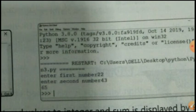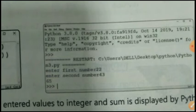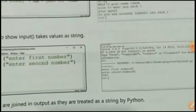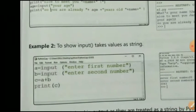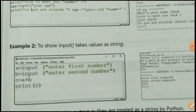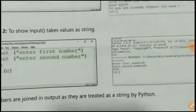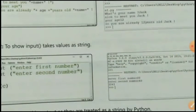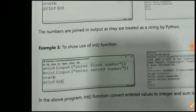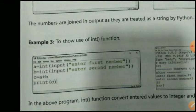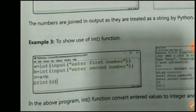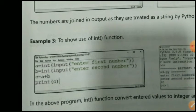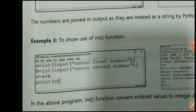For example, if you enter first number 22 and second number 43, your answer will be 65. But in example number two, if you write a = input(), the numbers will concatenate like 2243 instead of adding. If you want to properly add the numbers, you have to use example number three: a = int(input('Enter your first number')), then close the parentheses two times.